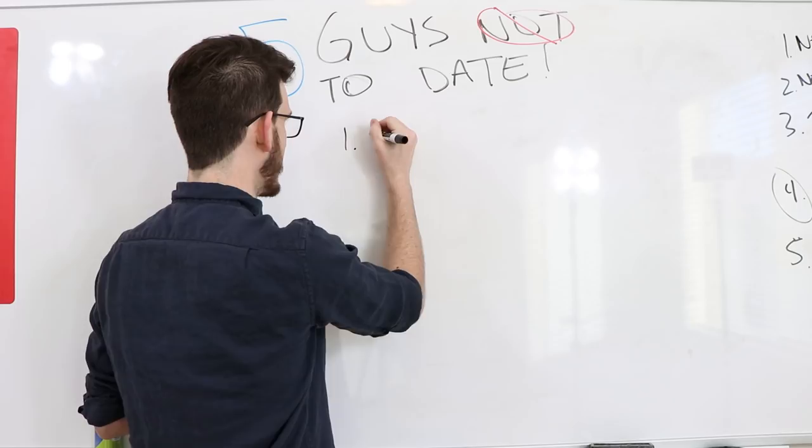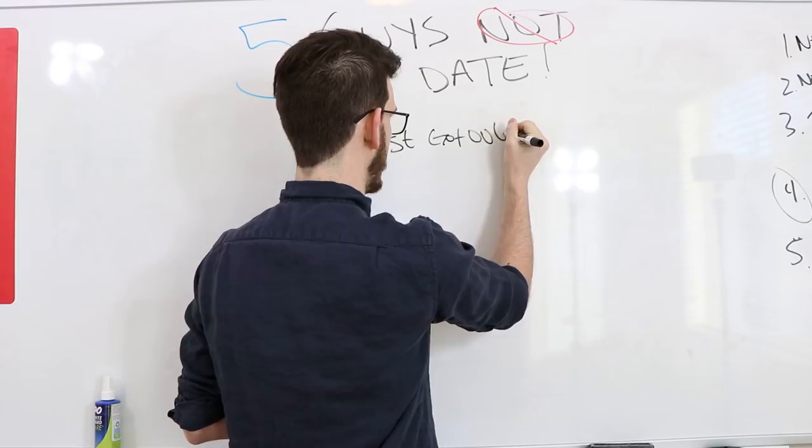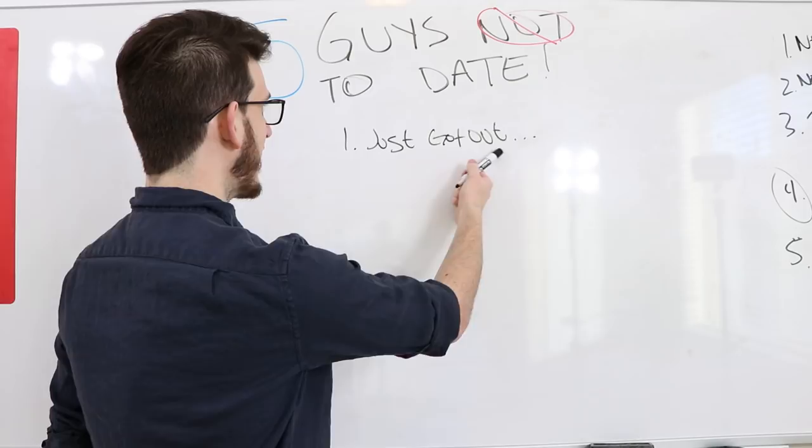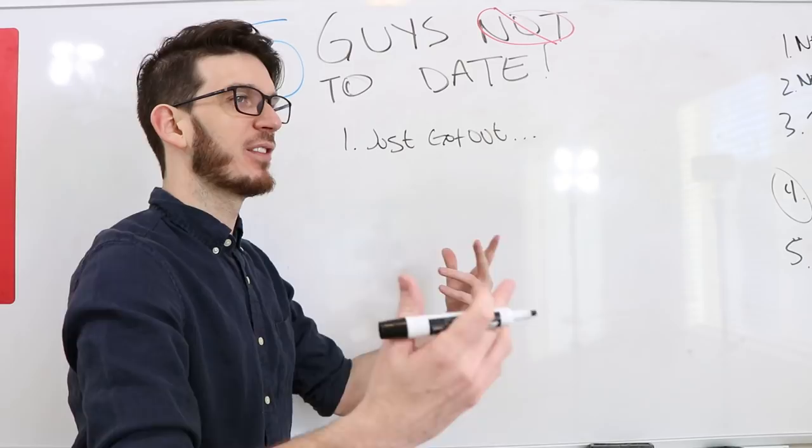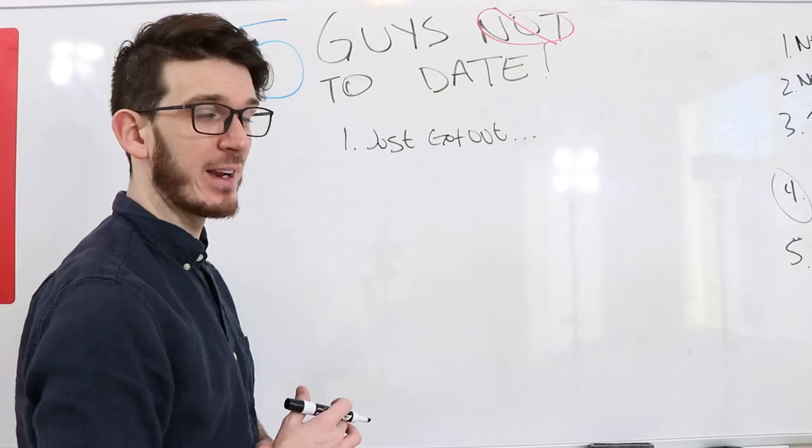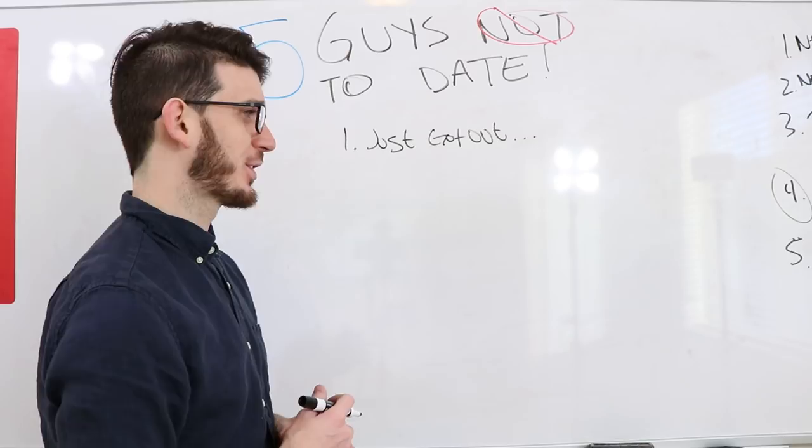These are the guys you don't date. A lot of this is obvious, you'll probably agree with me because you've experienced it too. Number one is the guy who just got out of a relationship—just got out, sounds like a prison sentence, sometimes it is. The guy who just got out. Now what is the right length of time for this kind of guy?